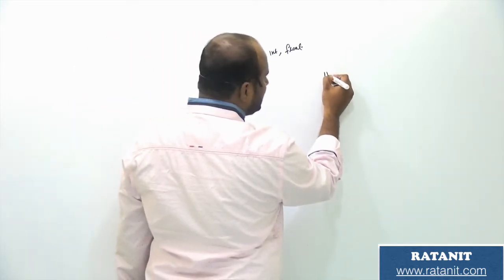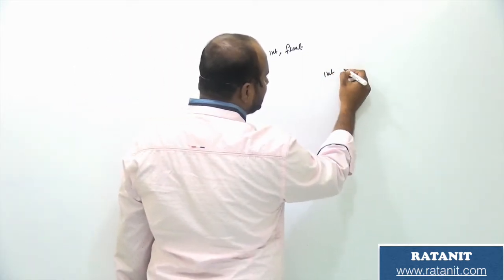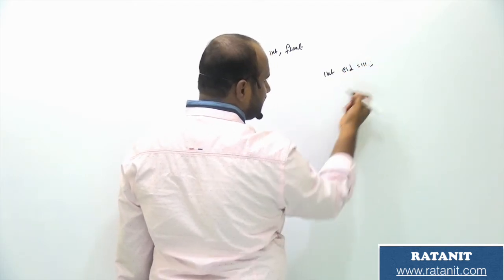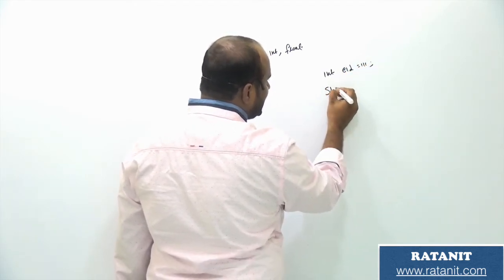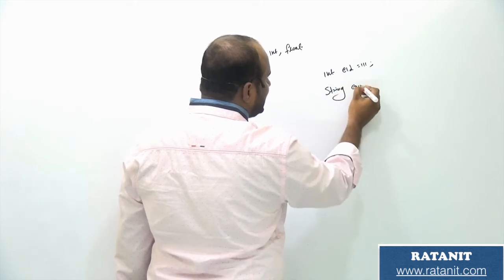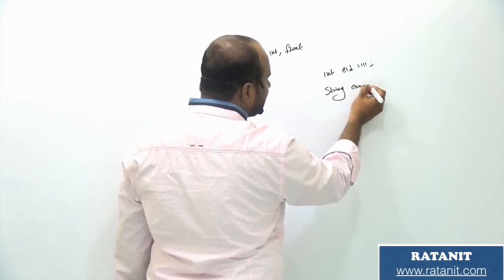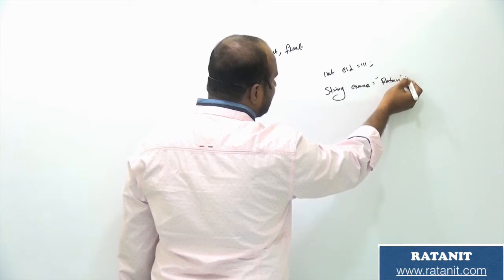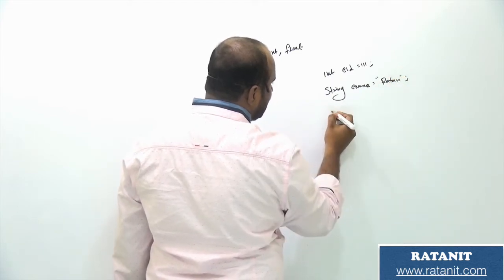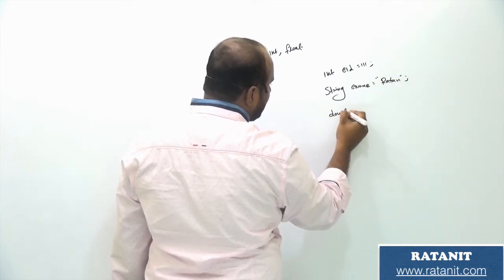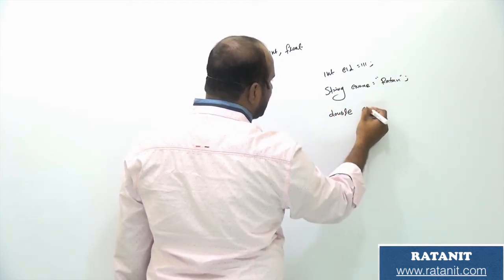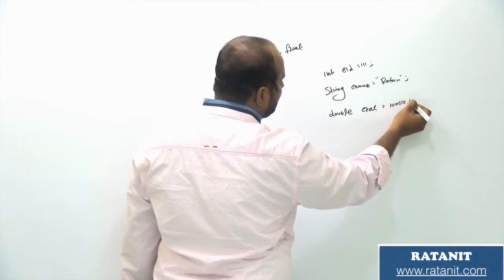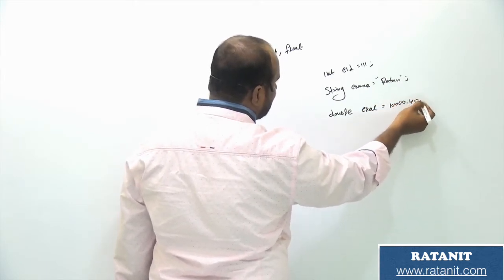In Java, to represent an integer value: 'int employeeId = 111;' semicolon required. For a string: 'String employeeName = "Ratan";'. For a double: 'double employeeSalary = 10000.45;' — we write the data like this in Java.